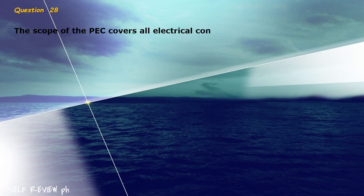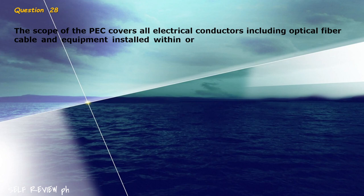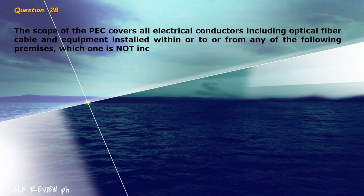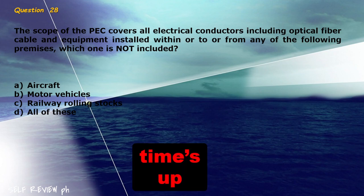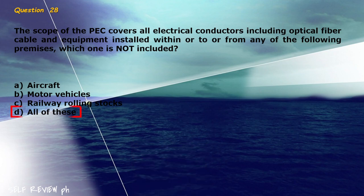Question 28: The scope of the PEC covers all electrical conductors including optical fiber cable and equipment installed within, or to or from any of the following premises — which one is not included? A) aircraft, B) motor vehicles, C) railway rolling stocks, D) all of these. The correct answer is letter D, all of these.